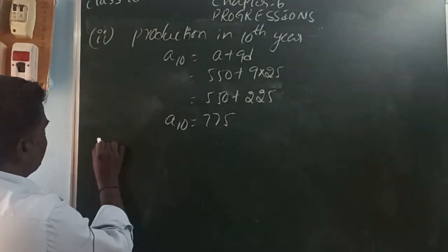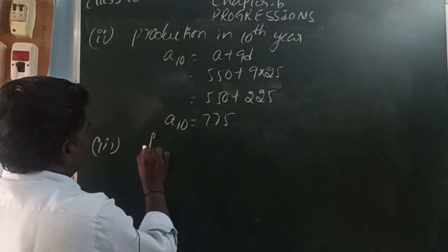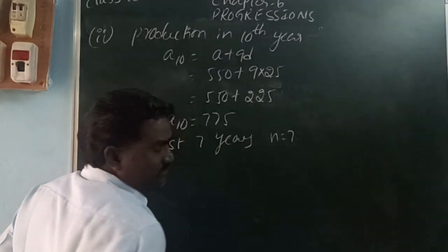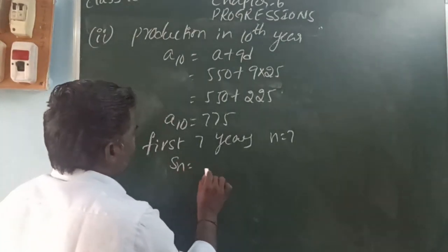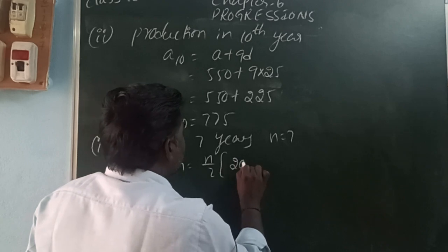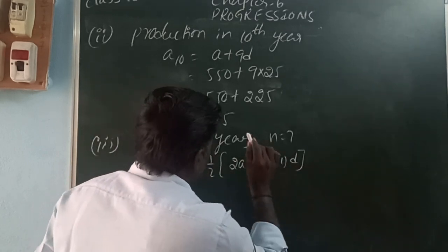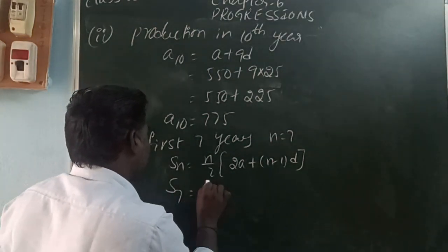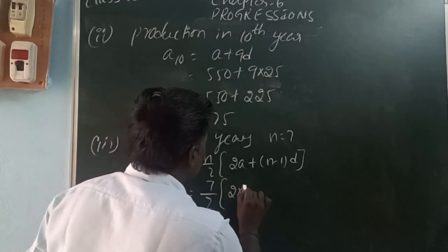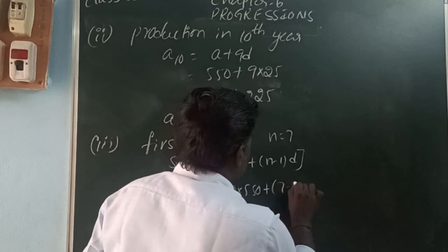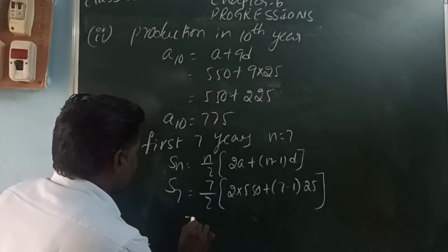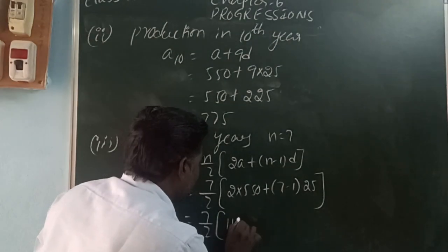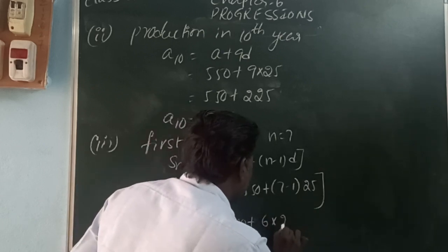The third question asks for the total production in the first 7 years. Total means sum, with n = 7. Using Sn = n/2 × (2a + (n-1)d): S7 = 7/2 × (2×550 + 6×25) = 7/2 × (1100 + 150) = 7/2 × 1250.